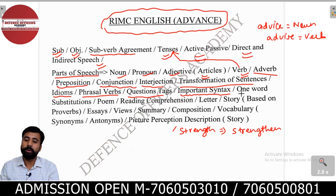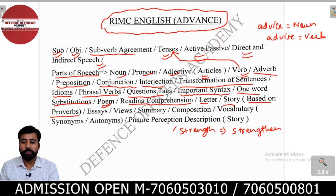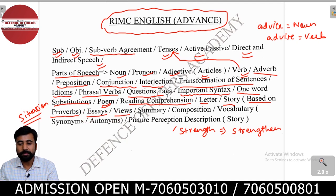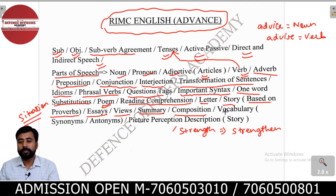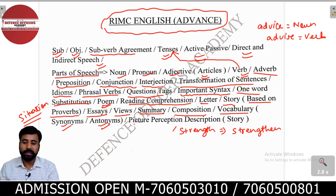For example, comparative degree to positive degree or positive to comparative — such questions have been asked. Then there are idioms — very important. Phrasal verbs — questions from phrasal verbs come every time. Question tags — very important. Then there are some important syntax topics. One-word substitution also appears in the exam. Poem is there. Reading comprehension covers the reading part. Letter writing is there. Story based on proverbs or based on situations — this time a situation was given and you had to write a story.